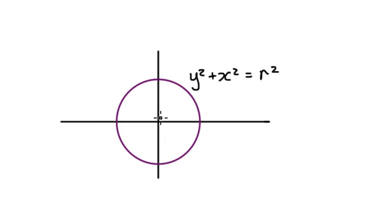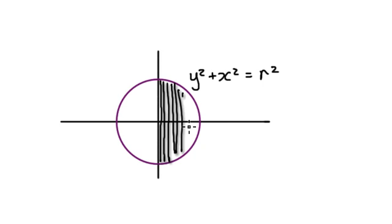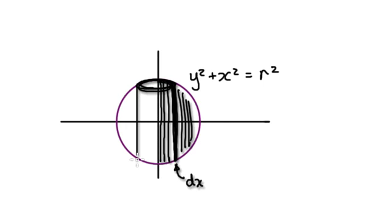In this video we're going to use a new technique: summing up all the cylinders. As you rotate this 360 degrees along the y-axis, one particular cylinder has a thickness associated with it — the thickness is dx. When you rotate it 360, you form yourself a cylinder. So we sum up all the cylinders to work out the volume of the sphere.